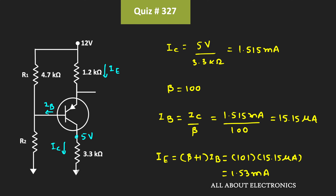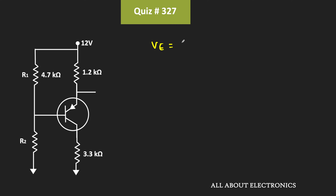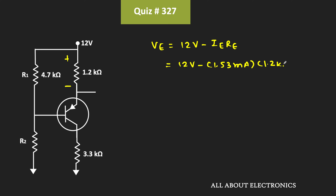In this way, from the voltage across the 3.3kΩ resistor, we got the values of the collector current, base current, and emitter current. Using this emitter current, we can find the voltage at this node — that is the emitter voltage. The emitter voltage VE will be equal to 12V minus the voltage drop across the resistor, that is 12V minus 1.53mA times 1.2kΩ, which equals 12V minus 1.83V, giving VE = 10.16V.